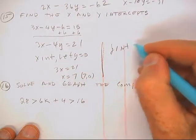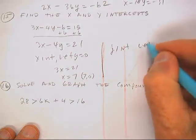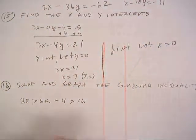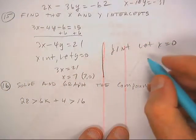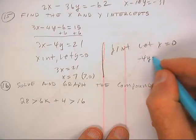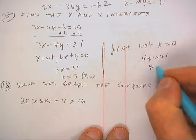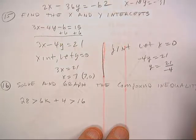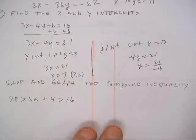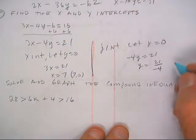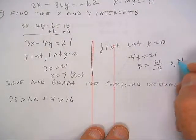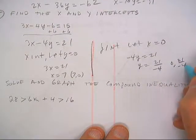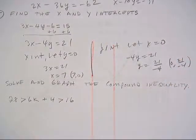To find the y-intercept, you let x be 0. So you would get this one. Okay, that doesn't reduce. Some of y'all can change it to a fraction or to a decimal — that's okay. This one is negative 21 over negative 4.